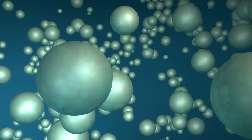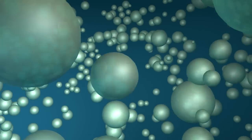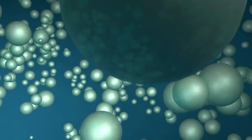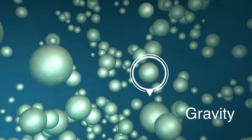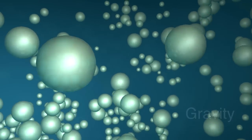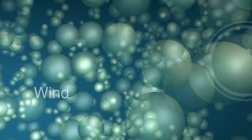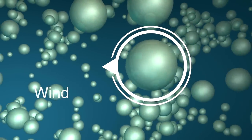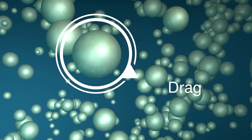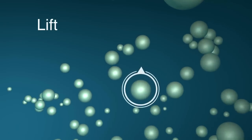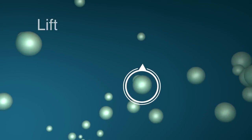To understand how spray drifts, we have to look at droplet behavior. The forces acting on spray droplets include gravity, evaporation, wind, drag, and lift. Gravity pulls the droplet down out of the air. Evaporation makes droplets smaller. Wind will move droplets. Drag will slow droplets. Lift, which is rising air, carries small droplets upward.